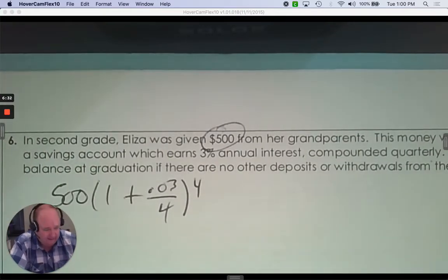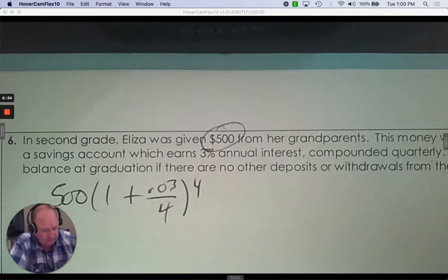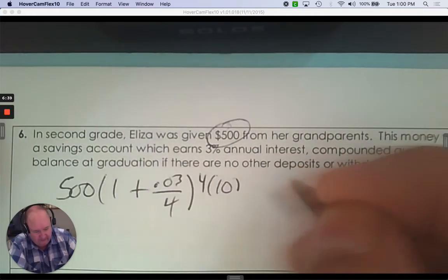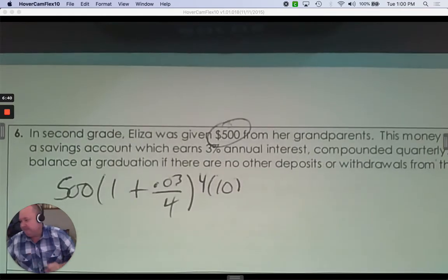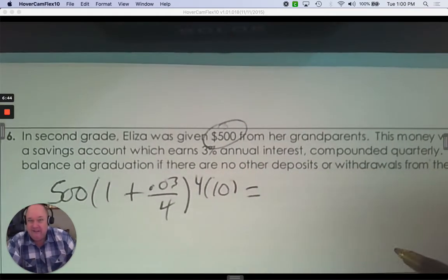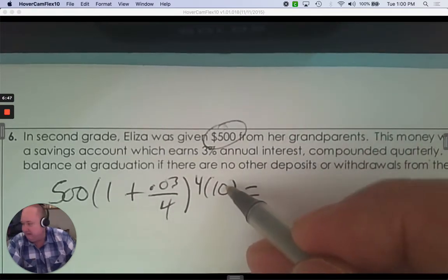Let's assume graduation's in 12th grade. So second grade to 12th grade, let's assume that's 10 years and you graduated on time. Put that in the calculator. So from second grade to 12th grade, that's 10 years.